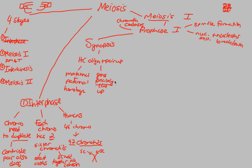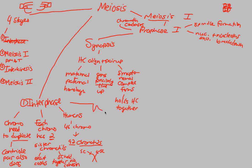Also, something known as the synaptonemal complex forms — this is the complex that holds the homologous chromosome pair together. The end result of synapsis is the creation of what's known as a tetrad. Tetra means four — because if we have the homologue from mom and the one from dad, each already with two sister chromatids, they combine to form four chromatids total: a tetrad.